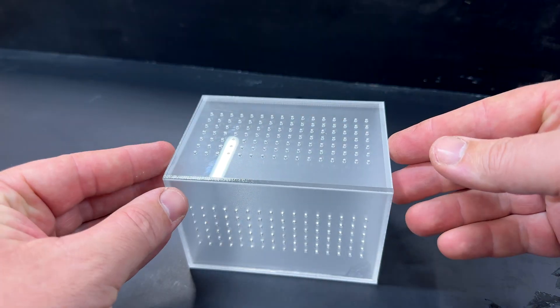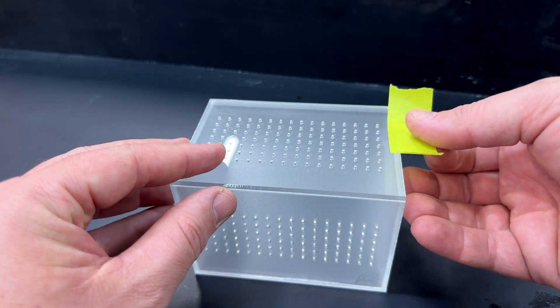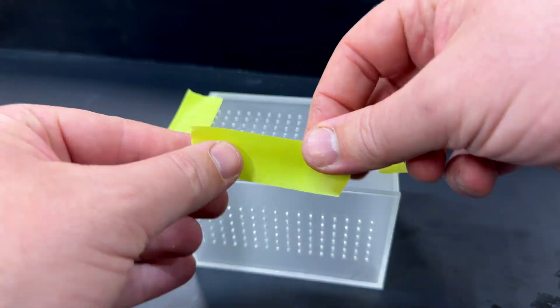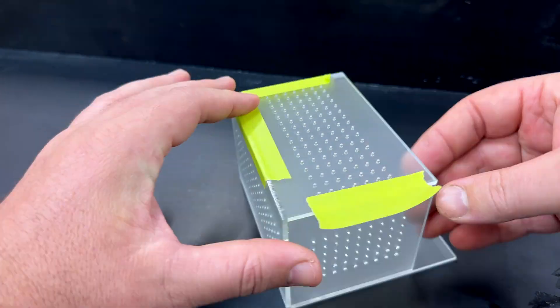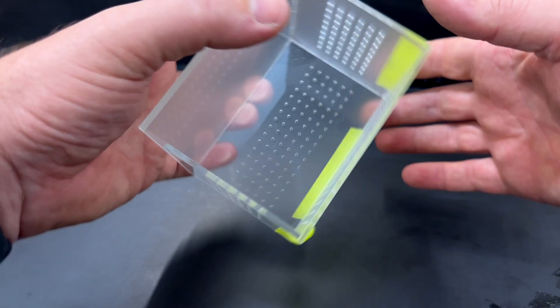The front of the box goes on like this and to help me keep this in place before I glue it up I like to use masking tape and I just put little pieces on the sides like this just to make sure everything lines up properly.